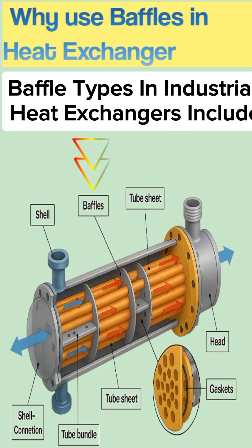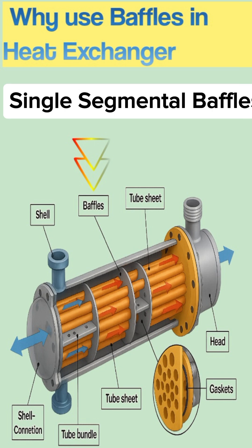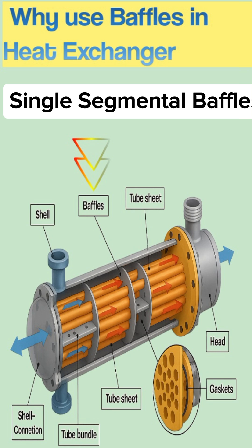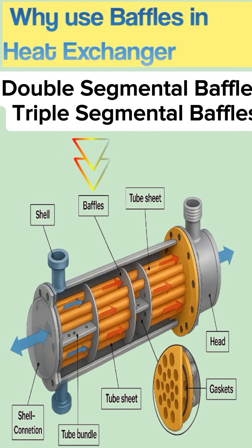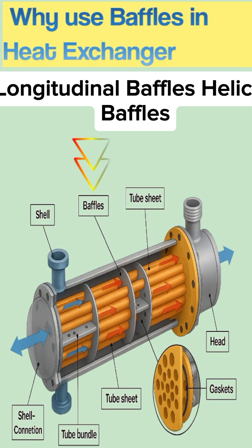The commonly used baffle types in industrial heat exchangers include single-segmental baffles, double-segmental baffles, triple-segmental baffles, disc and donut baffles, impingement orifice baffles, longitudinal baffles, and helical baffles.